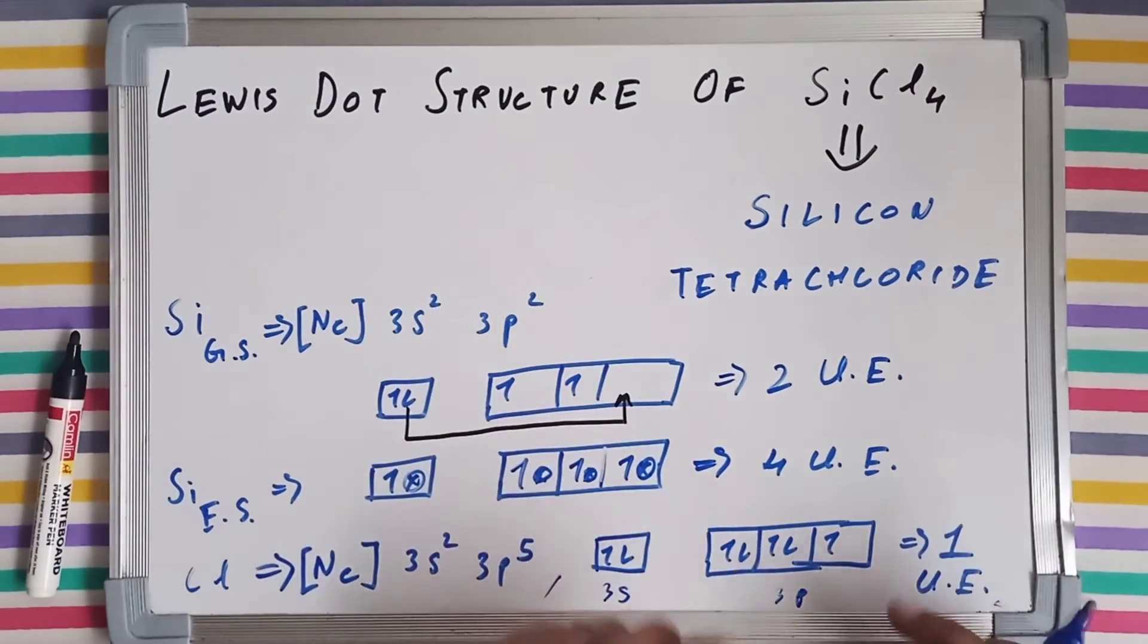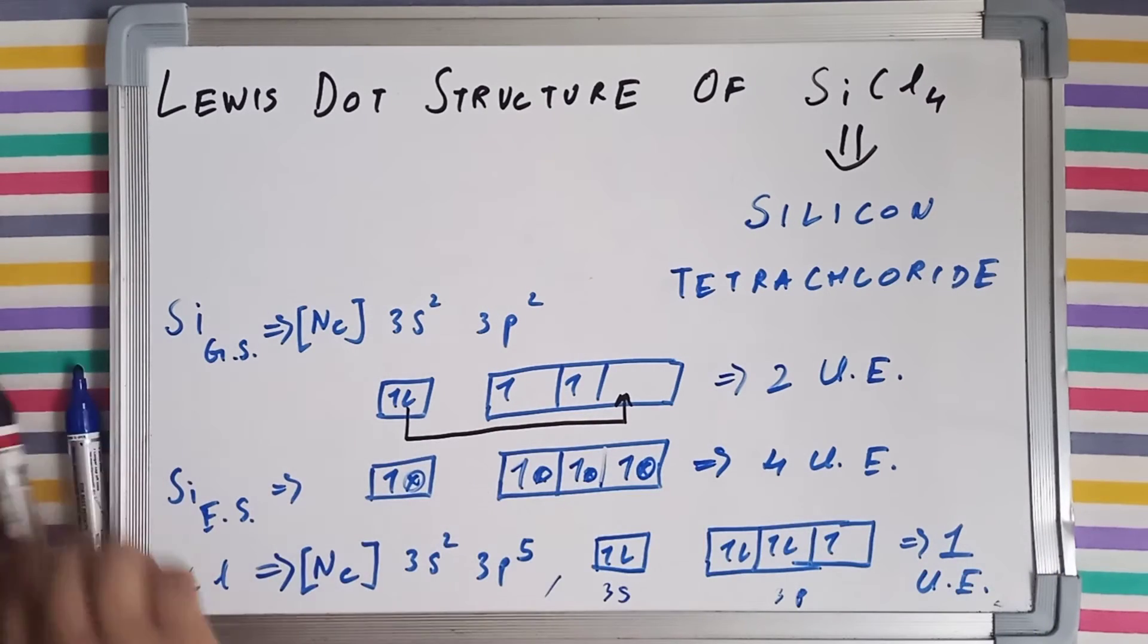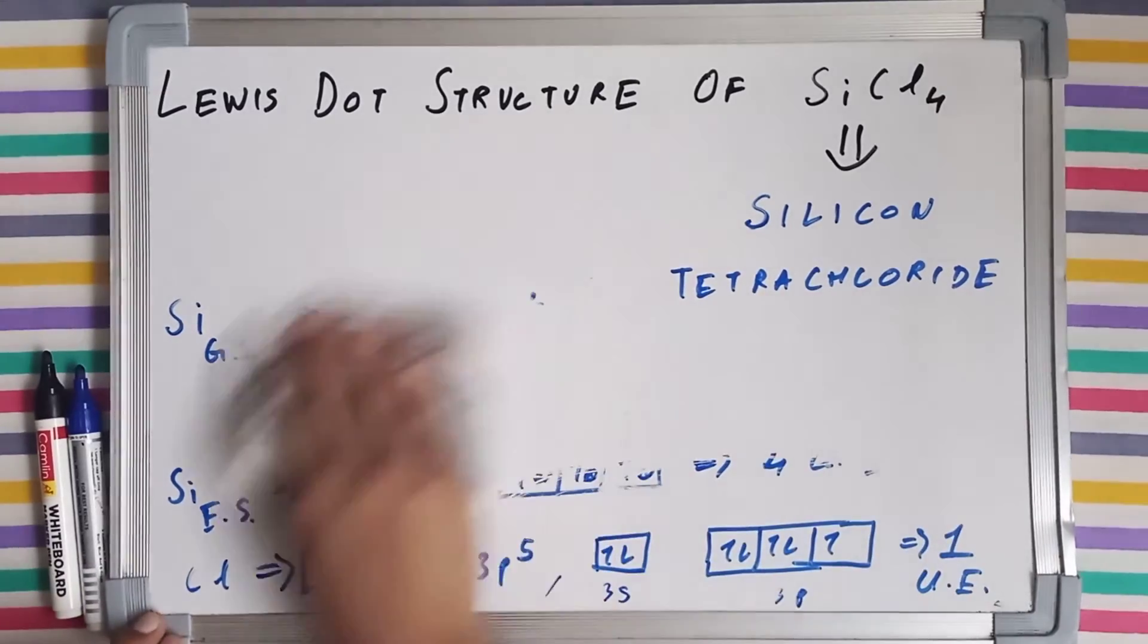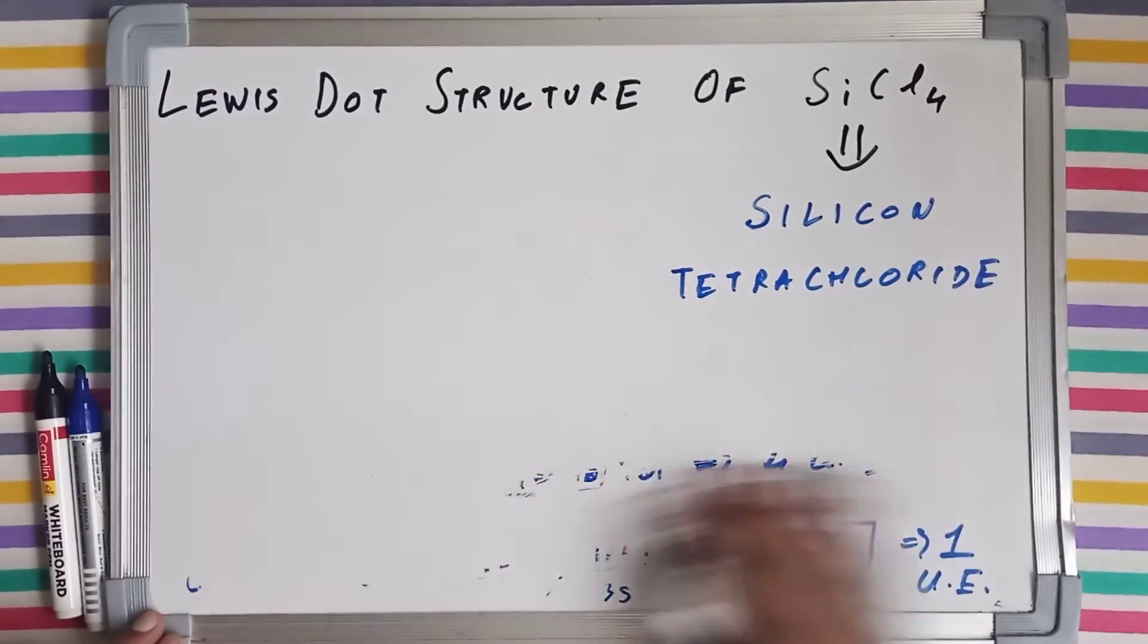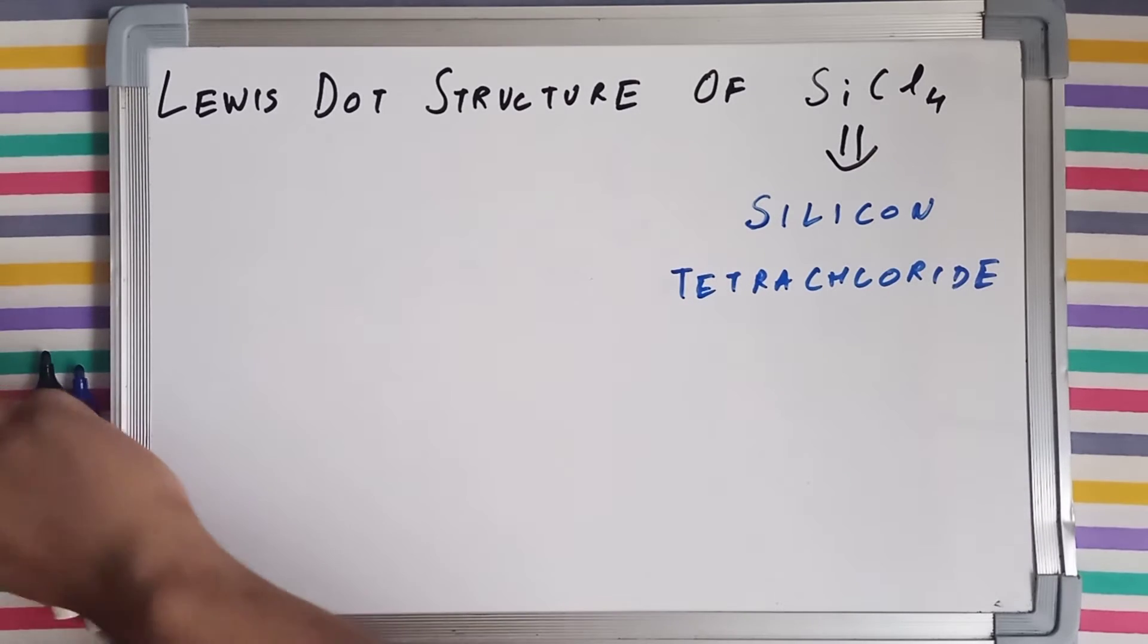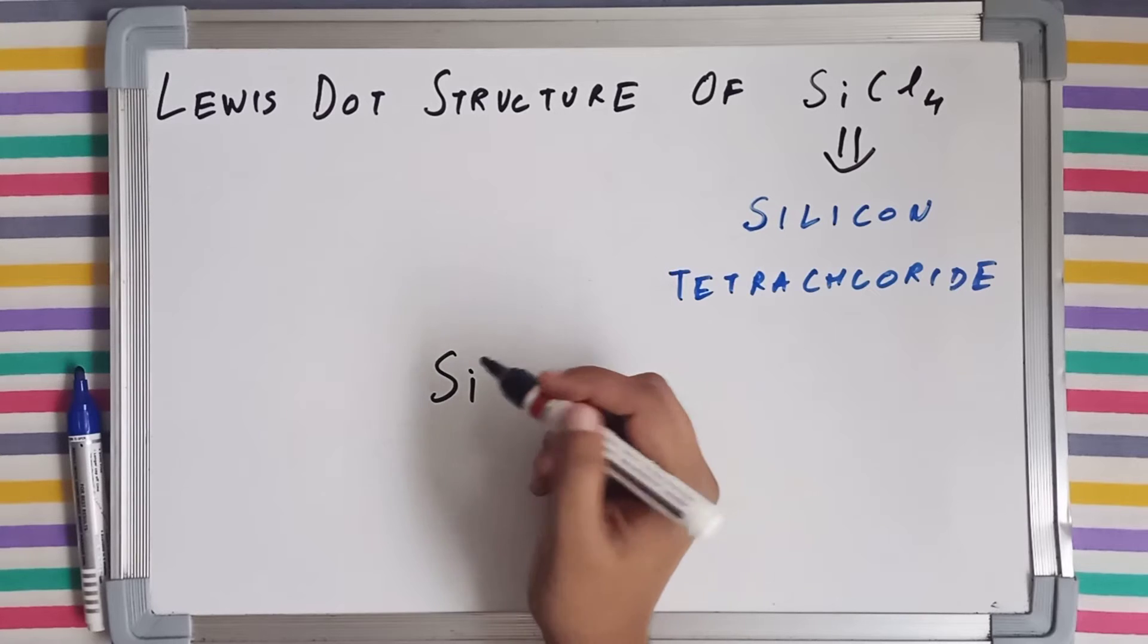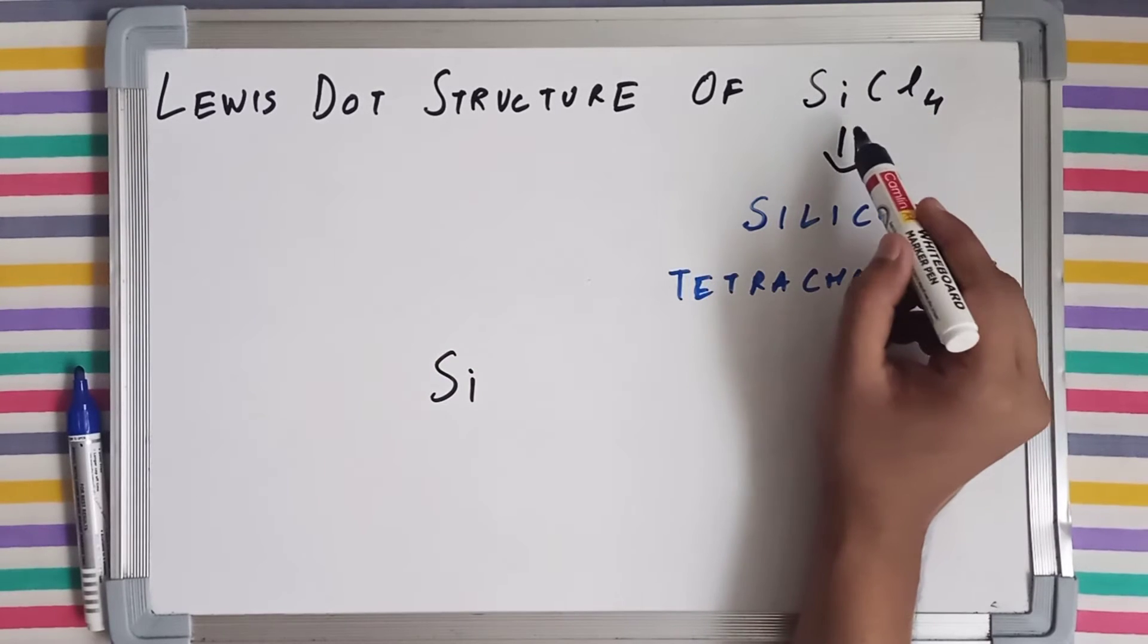Now let's dive into the structural part of silicon tetrachloride. As I said, silicon is going to make four bonds, right? And silicon here is our central atom because it is lesser in number—we have just got a single silicon in SiCl4.